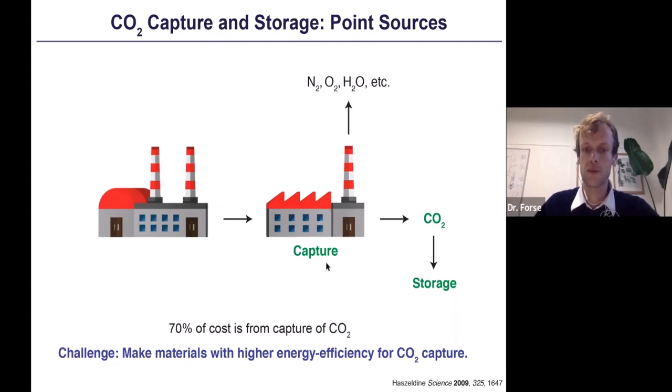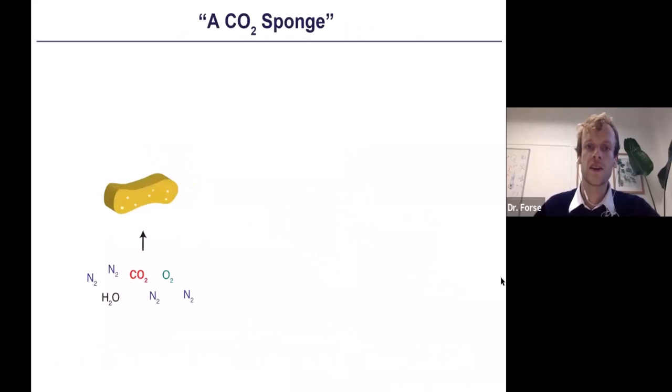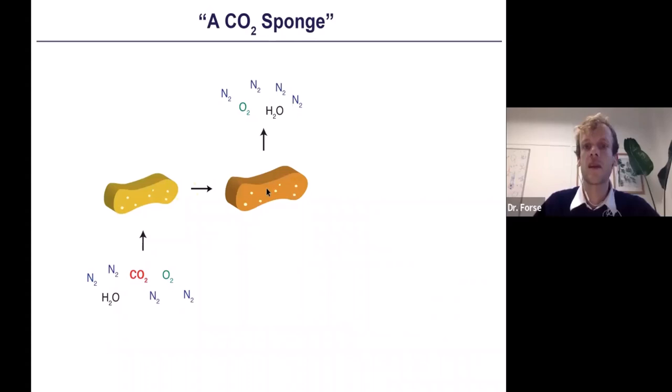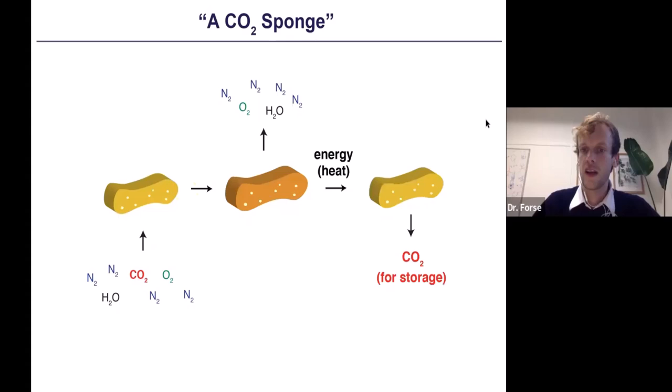There is a lot of interest in making improved materials for more efficient carbon capture. On a basic level, we have a sponge-like adsorbent material through which we pass the mixture of gases. The sponge is selective so that only CO2 is absorbed. Other molecules pass through, and then we regenerate the sponge — we wring it out, if you like — by applying heat so we can collect pure carbon dioxide for storage.